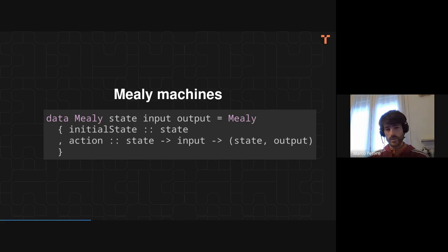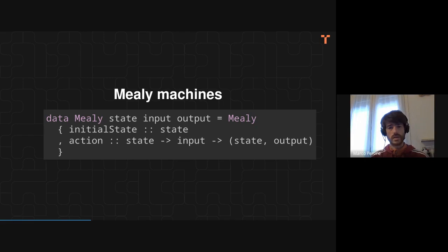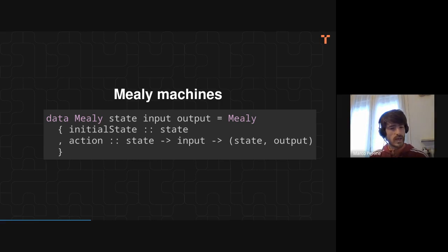It's just a data type called Mealy, which is indexed in three types — basically the sets which define the various components of the state machine. You have one type 'state', which describes the possible values of the state space. 'Input' describes all the possible inputs you can feed your machine with. And 'output' describes all the possible values you can get out. Concretely, the machine is made by two things: your initial state, and then an action — a stateful function. You give it an input, and you get back a new state and an output.